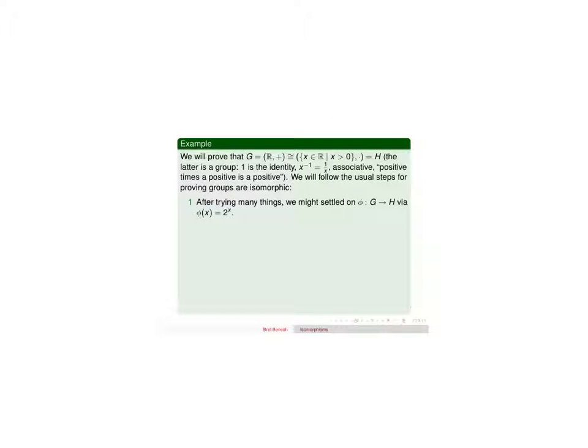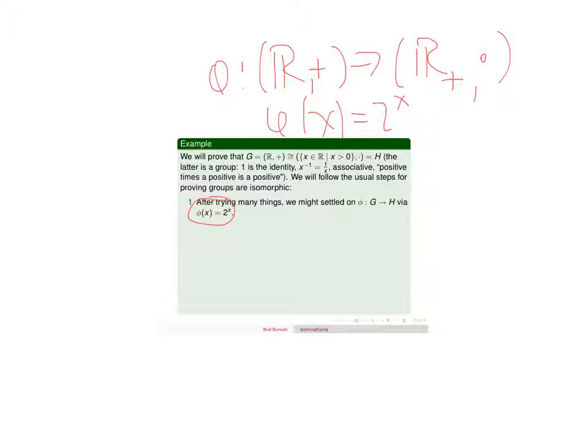So we're going to show it's 1 to 1 and onto. You might play around if you wanted to do this, but what you can show is that here's what the map is going to be. I'm going to take phi from the reals under addition to the positive reals under multiplication by phi of x equals 2 to the x. There are other possibilities too, but this is a good one.